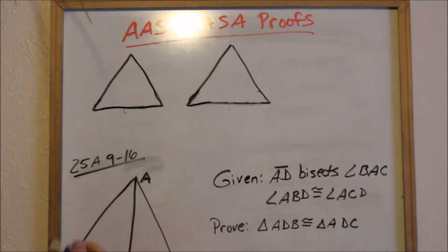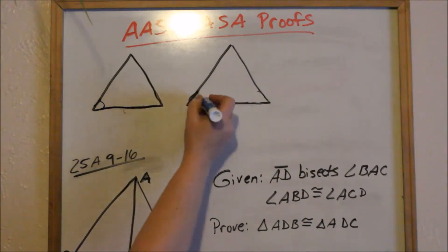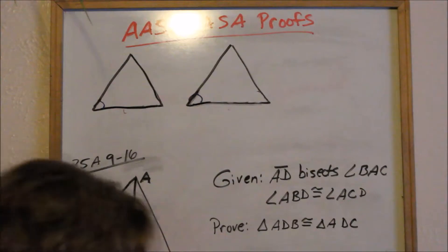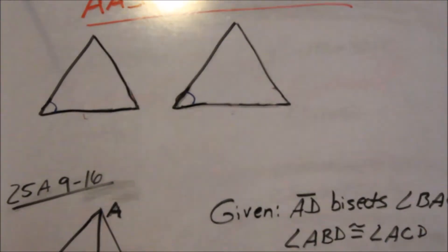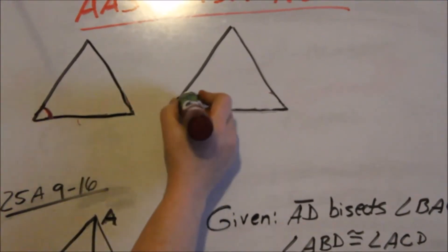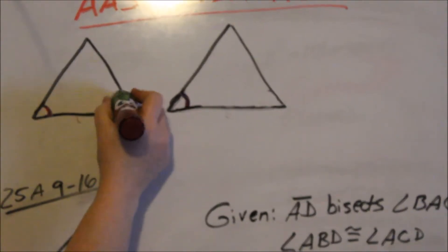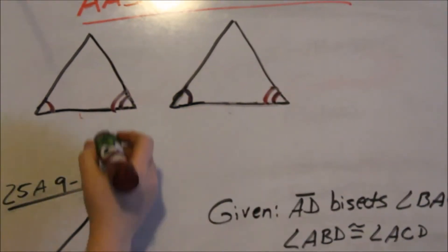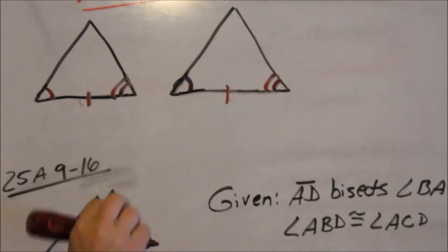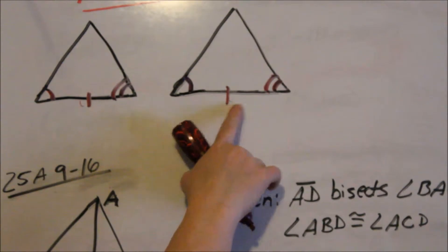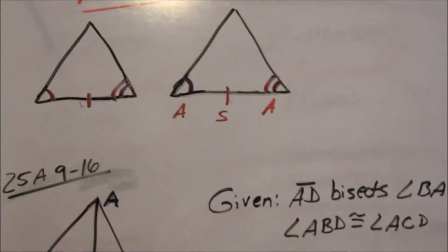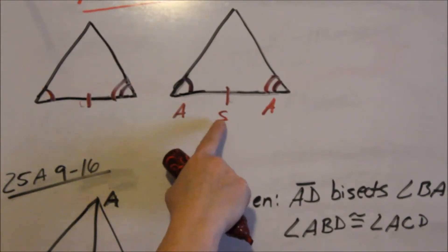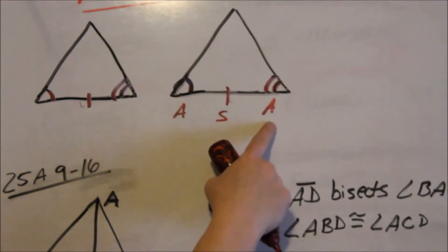Let's just say I have these two triangles. Let's say that this angle is congruent to this angle — let me grab my red so you can see it better. So this angle is congruent to this angle, this angle is congruent to this angle, and this side is congruent to this side. I can now prove by angle, side, angle. If you have angle, side, angle, these two triangles are congruent. The important thing for ASA is that your side has to be in between the two angles.